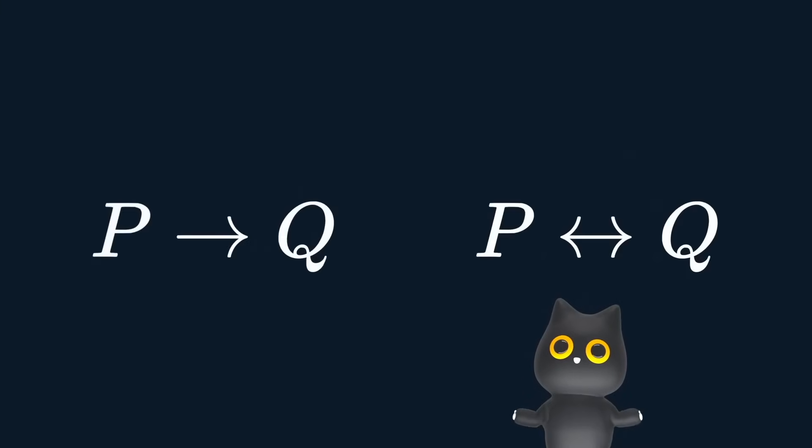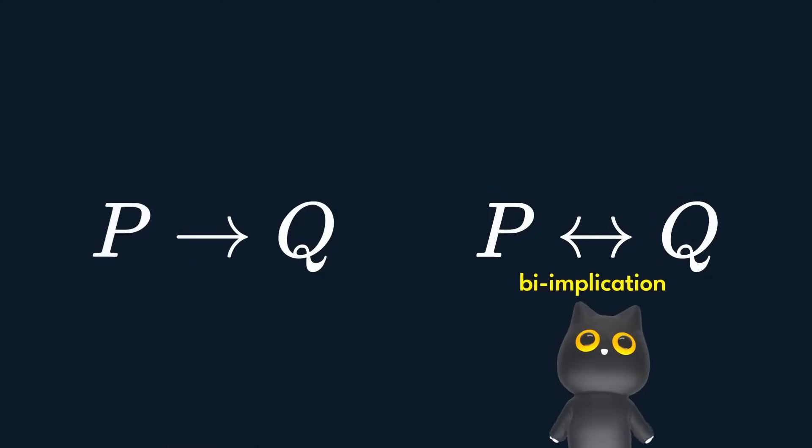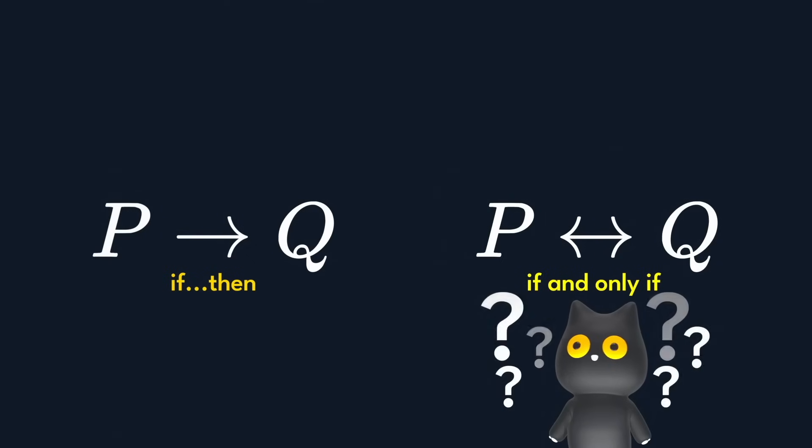The one that points right is known as implication. The one that points both ways is called bi-implication. You might know them as if then versus if and only if. People tend to confuse them both but they are actually very different.